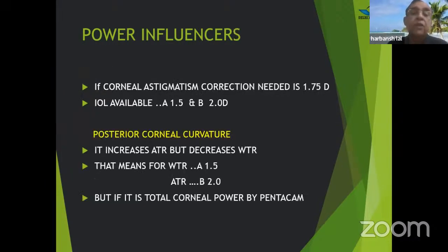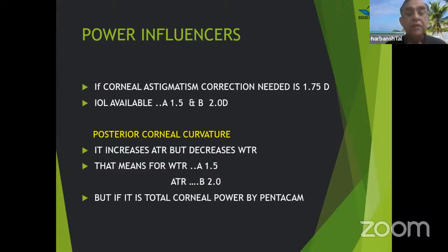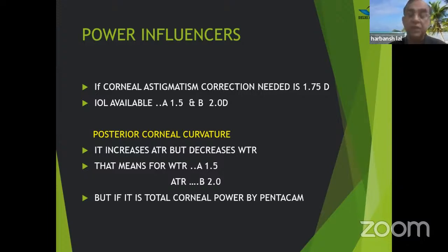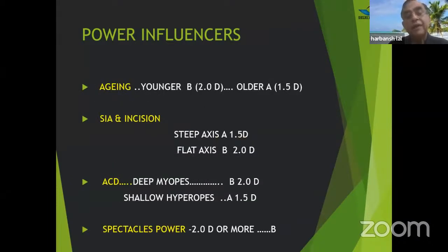If corneal acidity correction needed is 1.75 diopters — with IOL level A at 1.5 and level B at 2 diopters — what to choose? Posterior corneal curvature increases ATR but decreases WTR astigmatism in 85% of cases. So if dealing with with-the-rule astigmatism, 1.5 is better; against-the-rule, go for 2 diopters. However, if using Pentacam total corneal power, the posterior corneal curvature is already accounted for. For aging: younger patients keep shifting toward ATR, so go for 2 diopters; older patients, go for 1.5.